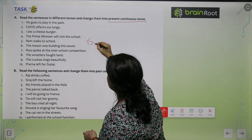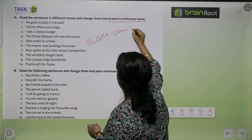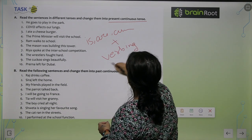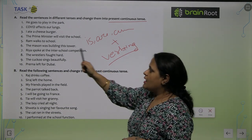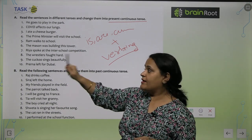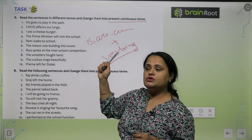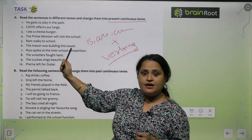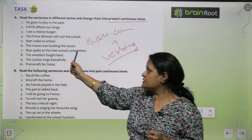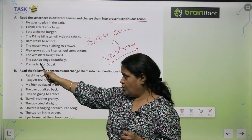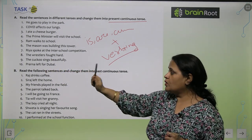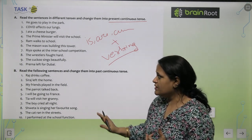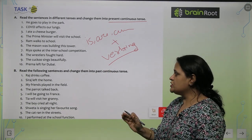In present continuous tense, the formula is: is / are / am + verb -ing form. So: 'Ram walks to school' → 'Ram is walking to school.' 'Rhea spoke at the inter-school competition' → 'Rhea is speaking at the inter-school competition.' 'The cuckoo sings beautifully' → 'The cuckoo is singing beautifully.' Some solutions I am giving you here, and the rest you will do yourself.